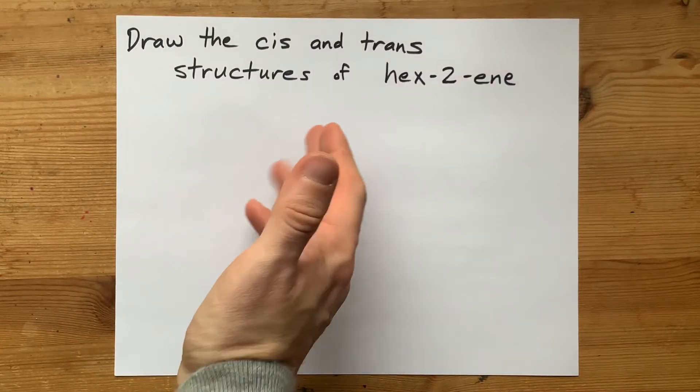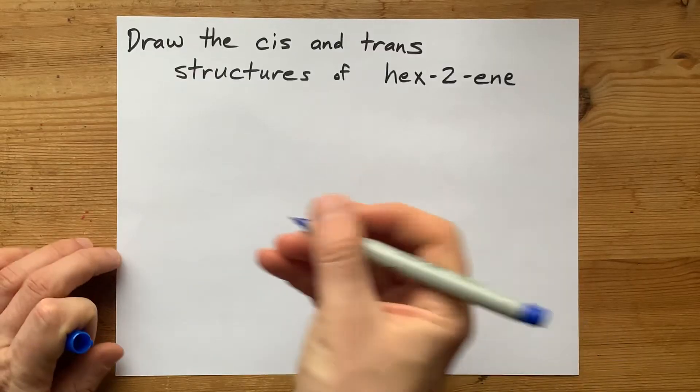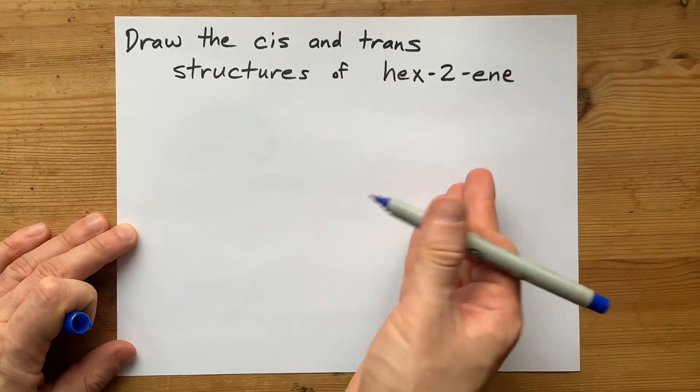Let's draw the cis and trans structures of hex-2-ene. Step one, let's draw this molecule to see what's even cis and trans to each other.